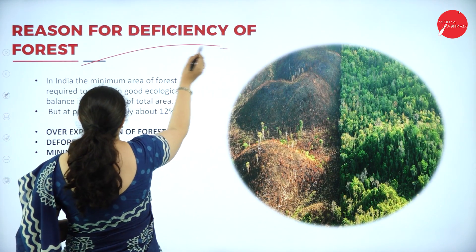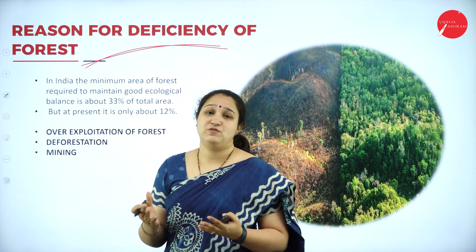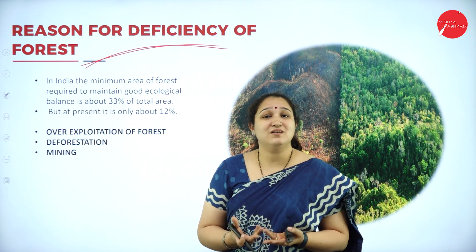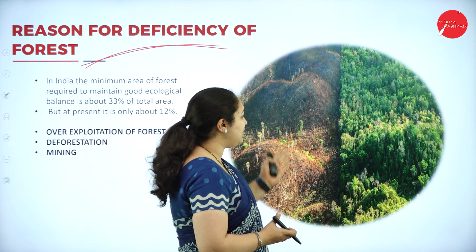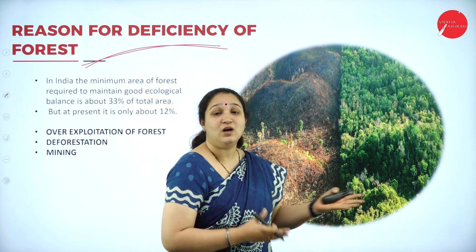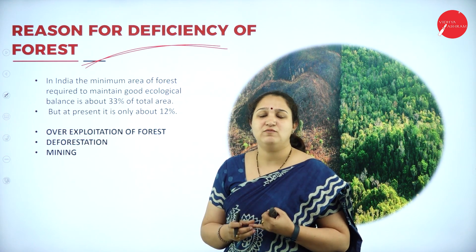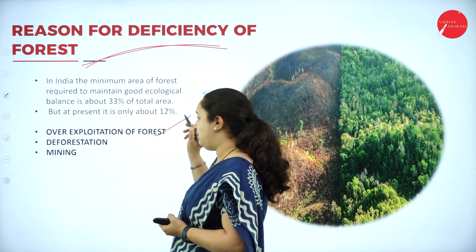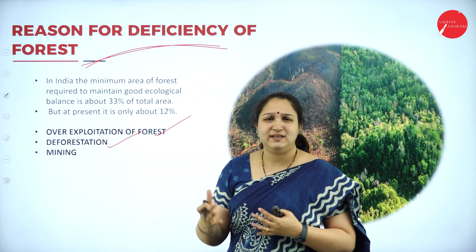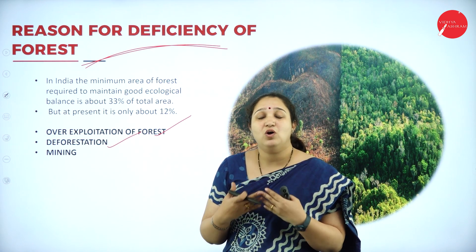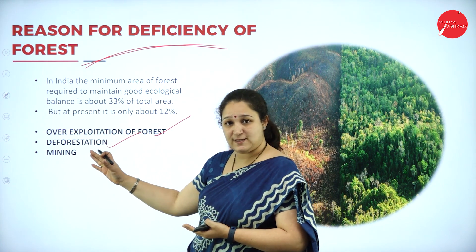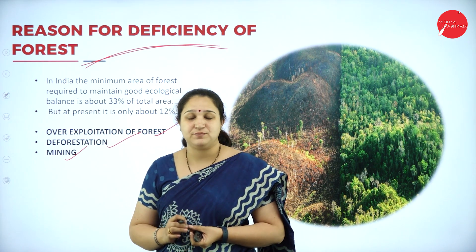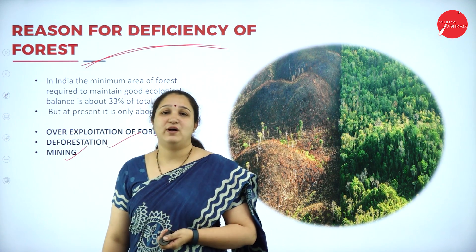Next are the reasons for deficiency of forest. India was supposed to have 33% forest cover but only 12% is left. Why are we getting converted into desertification and forests are completely getting spoiled? The main reason is over-exploitation — because we have a lot of commercial uses for forest, we are over-exploiting it. Then there is deforestation for commercial uses, dams, etc. Mining is also one of the reasons for deficiency of forest.